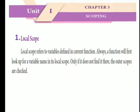Local Scope: Local scope refers to variables defined in the current function. Always, a function will first look up for a variable name in its local scope. Only if it does not find it there, the outer scopes are checked.